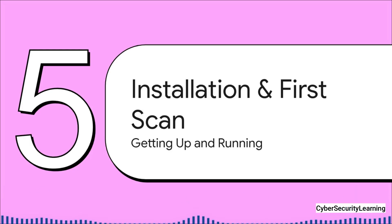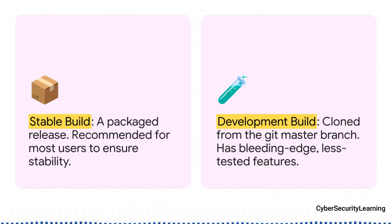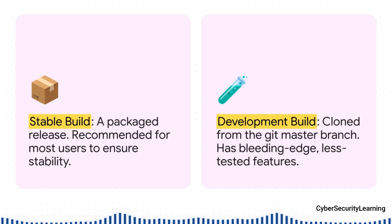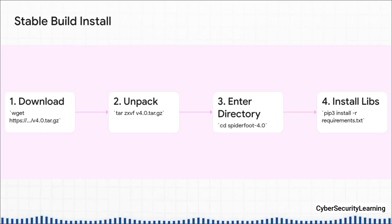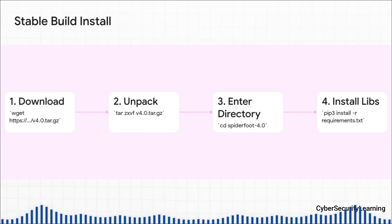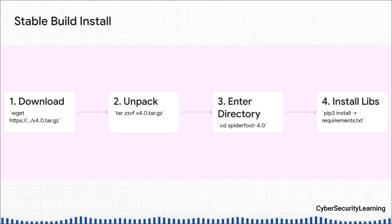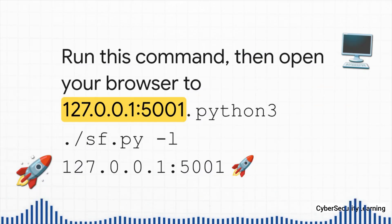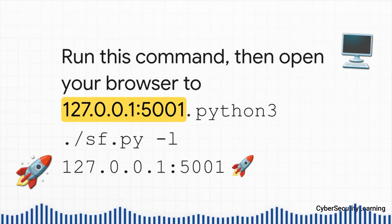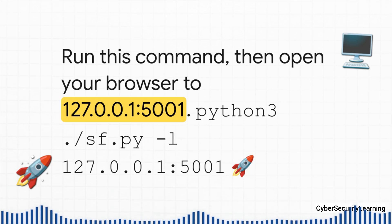How do you actually get this thing up and running? It's surprisingly easy. You've got two main choices: grab the stable release, which is recommended for pretty much everyone starting out, or clone the development build right from GitHub if you want the newest, not fully tested features. For the stable build on a Linux system, it's just four commands — you'll need Python 3.7 or higher. First, use wget to download the package. Second, unpack it with tar. Third, cd into the new directory. And last, use pip3 to install all the Python libraries it needs to run. The final step: run the sf.py script with the dash-L flag to tell it what IP address and port to listen on — in this case, your local machine on port 5001. Run that command, open your web browser to that address, and you're looking right at the SpiderFoot dashboard, ready to go.